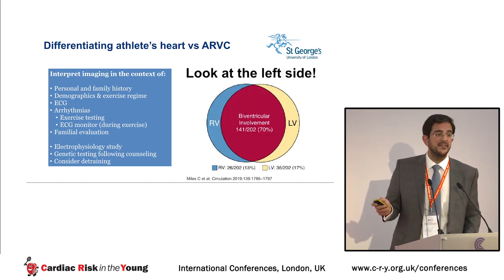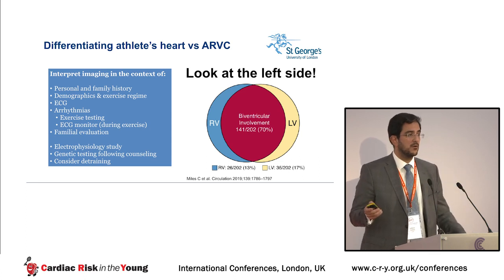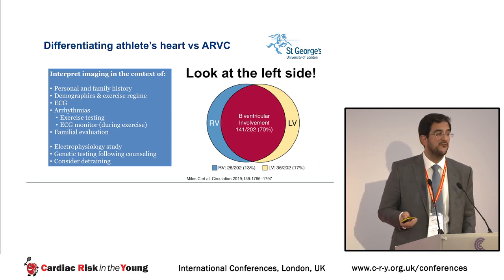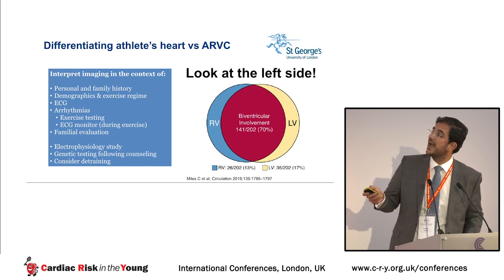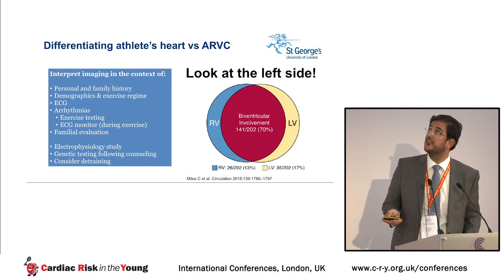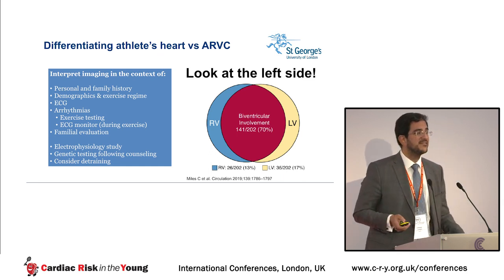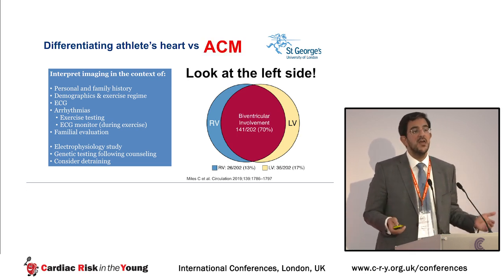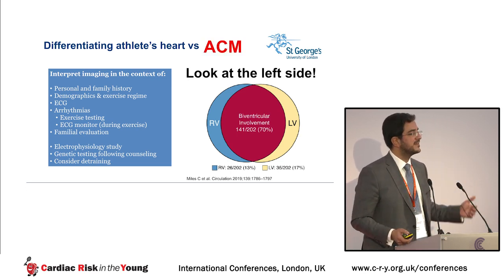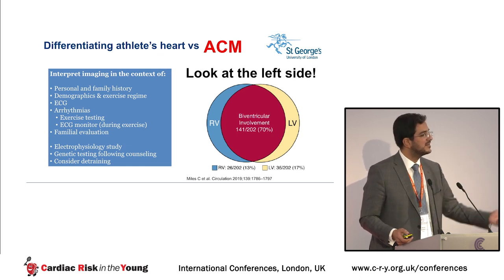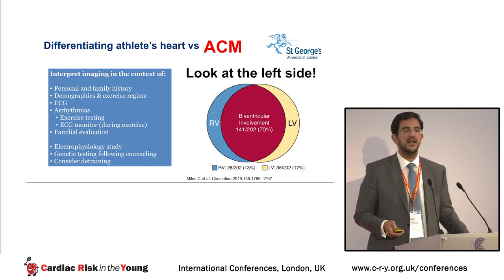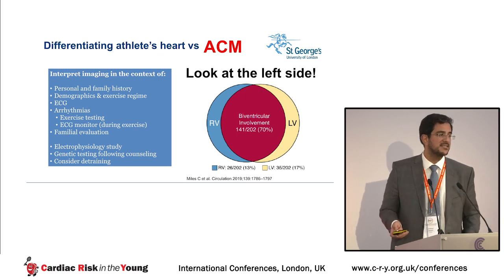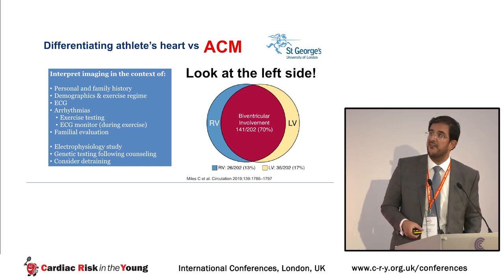A very important message: look at the left ventricle. Based on experience published by Chris Miles from the CRY Center of Cardiac Pathology, it's not purely ARVC — it's an arrhythmogenic cardiomyopathy. We are much better at evaluating wall motion abnormalities, myocardial fibrosis, and detailed tissue characterization on the left compared to the right side. So don't forget the left ventricle.